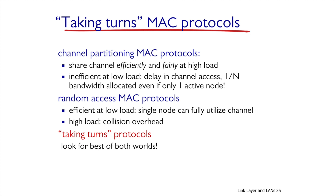Taking turns is the third class of MAC protocols that manage broadcast links. In the first class, where the channel is divided into exclusive parts, if all nodes have packets to transmit the channel utilization is 100%. But if only one node has a packet to send, the utilization will be 1/N where N is the number of nodes. In the second class, when every station has a packet to send, collisions occur constantly and we couldn't even send one packet. When few nodes send packets, the collision probability is low. The third class — taking turns — tries to combine the best features of both previous classes.